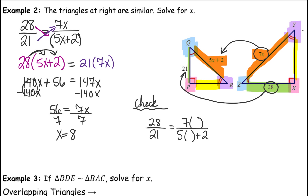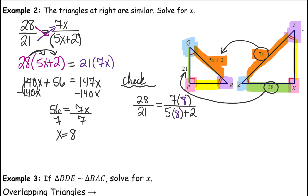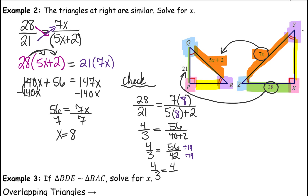To check the answer, we want to make sure that x equals 8 gives us the same ratio as the other corresponding sides. 7 goes into 28 four times and 7 goes into 21 three times, so that ratio is 4 over 3. Then 56 over 42 — when you divide numerator and denominator by 14, you get 4 over 3. It checks out.